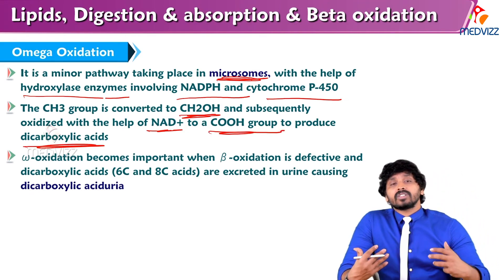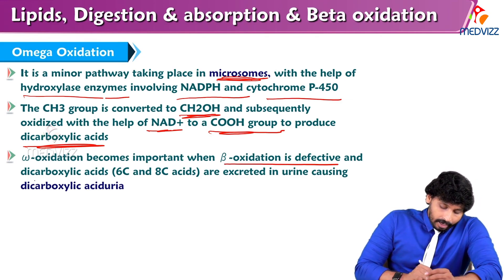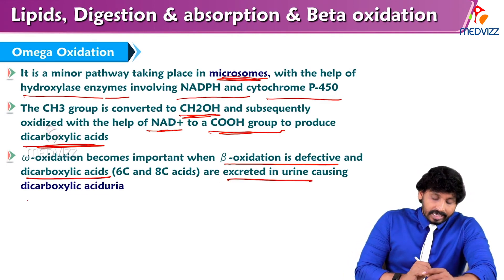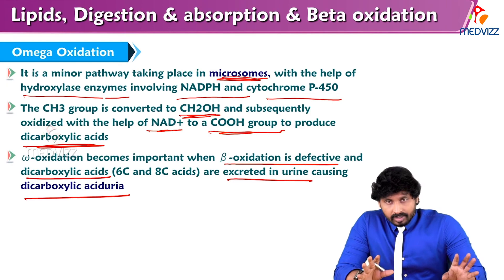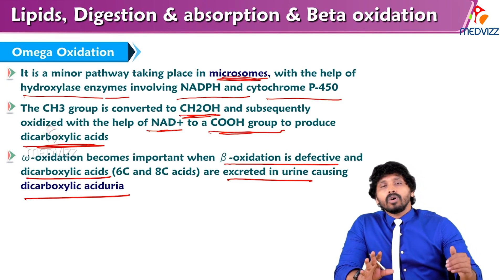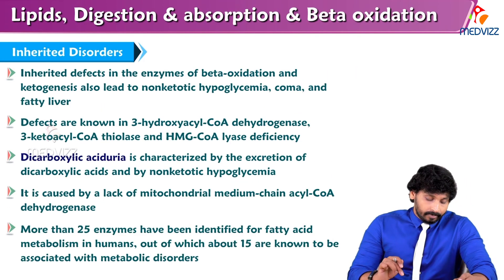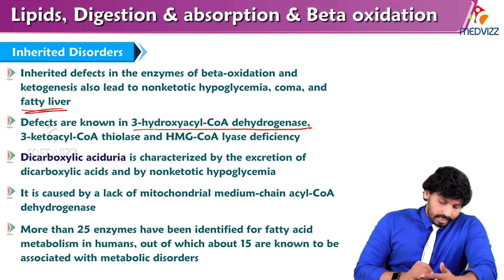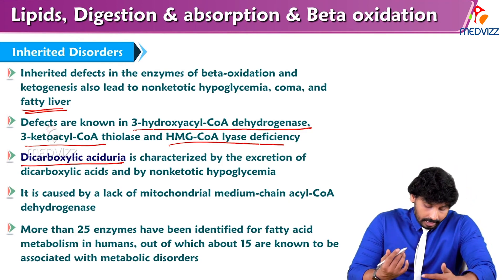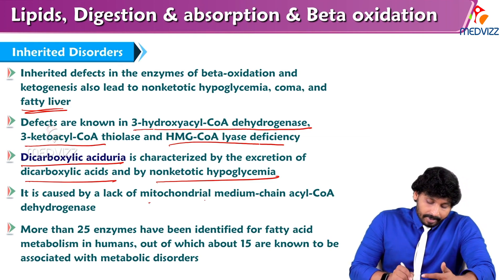In case of any defect in omega oxidation, there is accumulation of dicarboxylic acids which are excreted in urine. Omega oxidation becomes important when beta oxidation is defective, and dicarboxylic acids of 6 or 8 carbons are excreted in urine, causing dicarboxylic aciduria. The take-home message: when beta oxidation is not happening, omega oxidation is activated. If beta oxidation is defective, more omega oxidation occurs and more small chain fatty acids are produced, leading to dicarboxylic aciduria. Inherited defects in the enzymes of beta oxidation and ketogenesis also lead to non-ketotic hypoglycemia, coma, and fatty liver. Defects known include 3-hydroxyacyl-CoA dehydrogenase, 3-ketoacyl-CoA thiolase, and HMG-CoA lyase deficiency. Dicarboxylic aciduria is also genetic and is characteristic of dicarboxylic acids with non-ketotic hypoglycemia. It is caused by lack of mitochondrial medium chain acyl-CoA dehydrogenase.